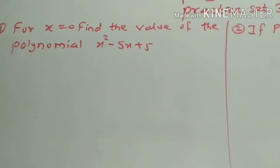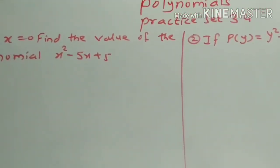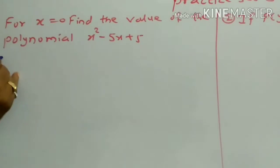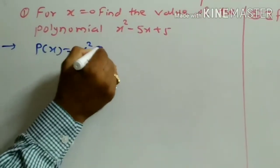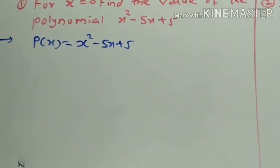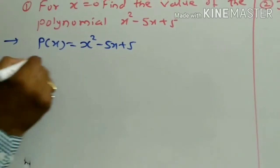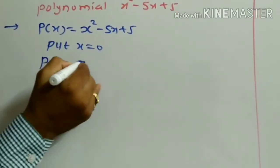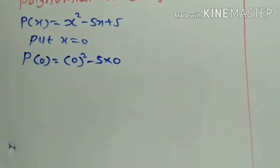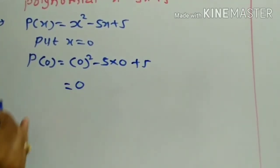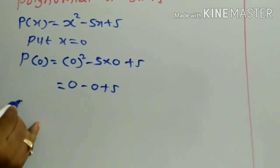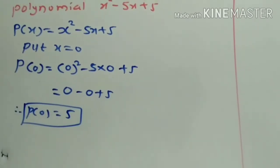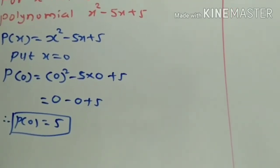Now we will start practice set 3.4. The first example is: for x equal to 0, find the value of the polynomial x squared minus 5x plus 5. The given polynomial is p(x) = x squared minus 5x plus 5. To find the value for x equal to 0, put x equal to 0. So p(0) = 0 squared minus 5 into 0 plus 5, which gives 0 minus 0 plus 5. Therefore, p(0) is equal to 5.